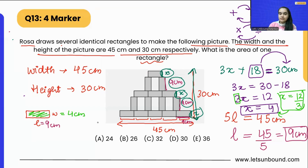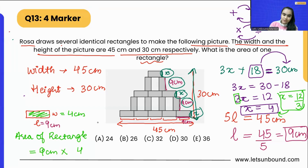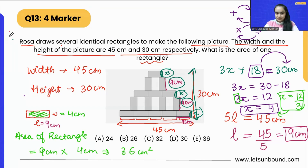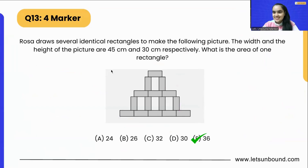Now we can find the area of the rectangle. Area = length × width = 9 centimeters × 4 centimeters = 36 square centimeters. That is our correct answer: 36 cm².